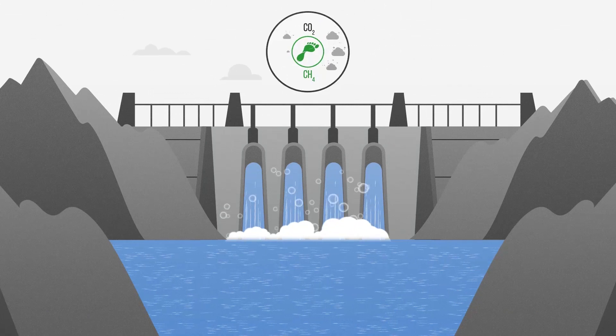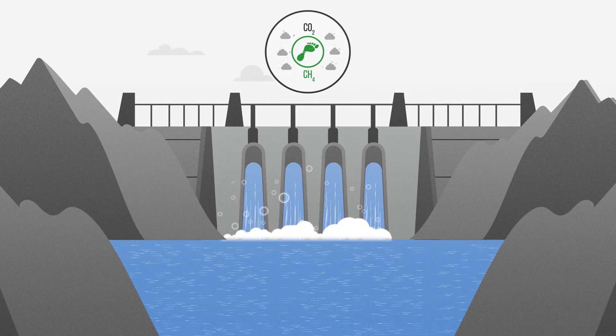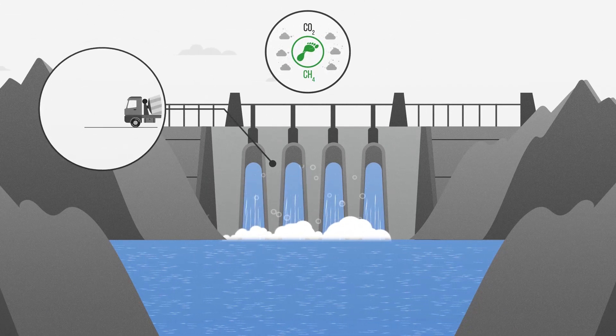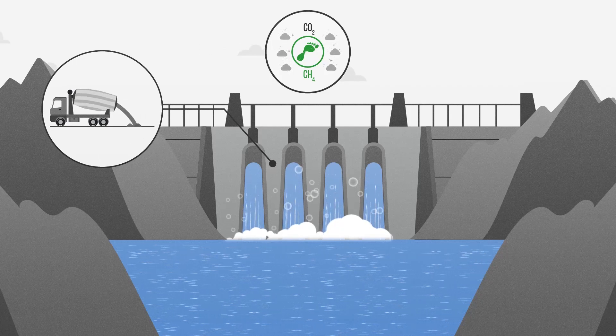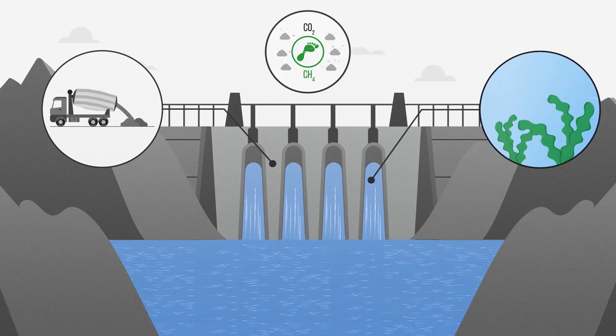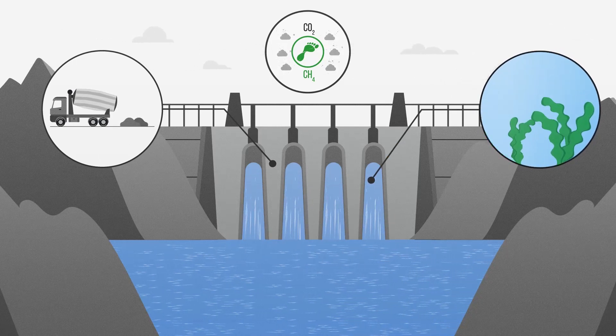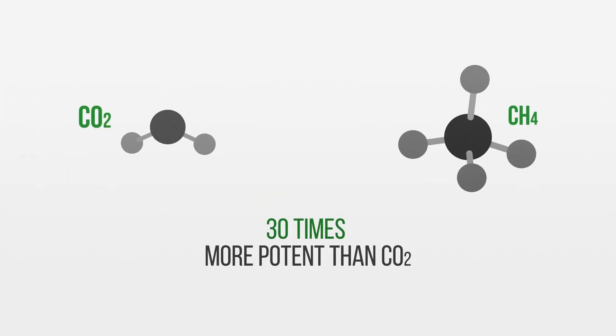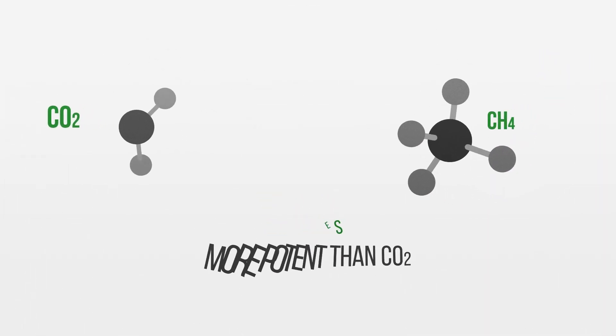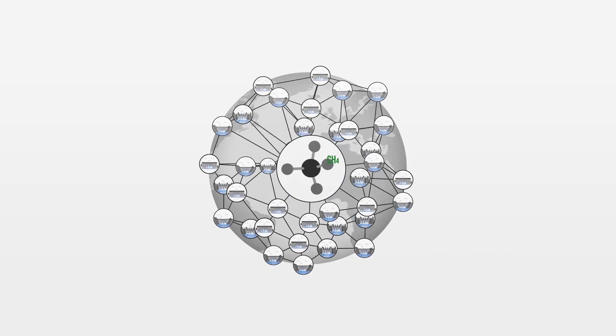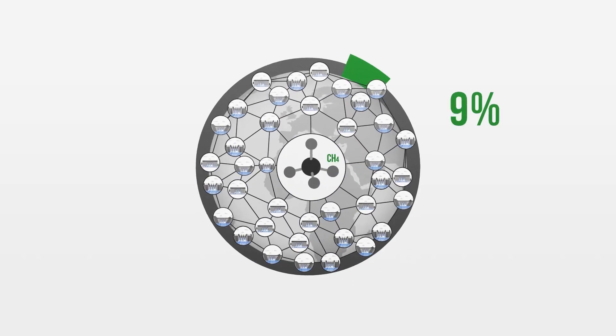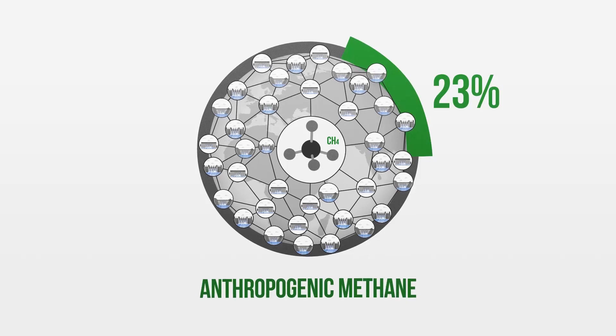One downside of impoundment dams is that they do generate significant life-cycle emissions. These are both from the emissions-intensive concrete used in their construction, as well as the methane released from rotting vegetation in the flooded reservoirs. Methane is a greenhouse gas which is 30 times more potent than CO2, and the reservoirs of impoundment dams have been estimated to generate 23% of all anthropogenic, or human-created, methane.